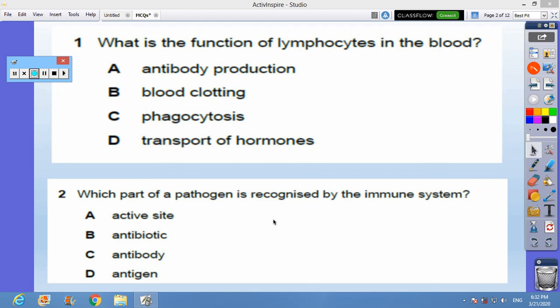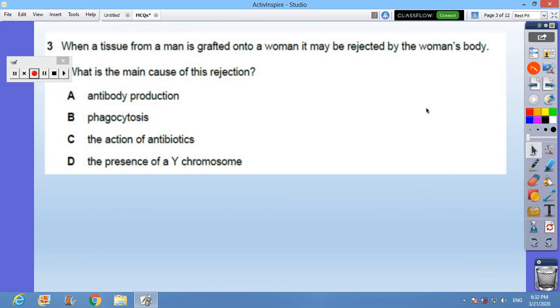Question 2: which part of the pathogen is recognized by an immune system? The antigen on the surface. Question 3: when a tissue from a man is grafted onto a woman it may be rejected by the woman's body. What is the main